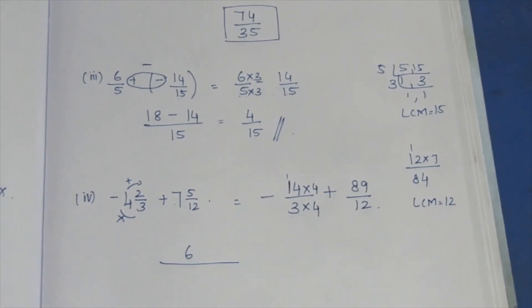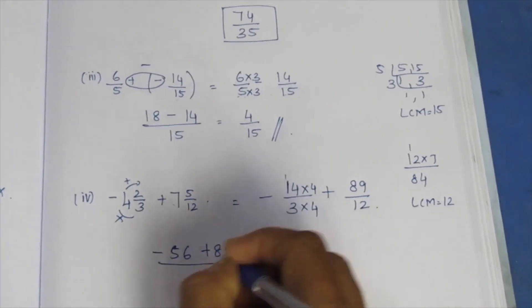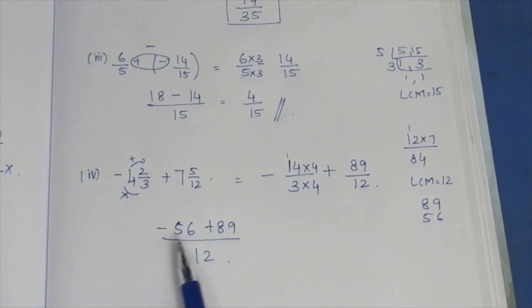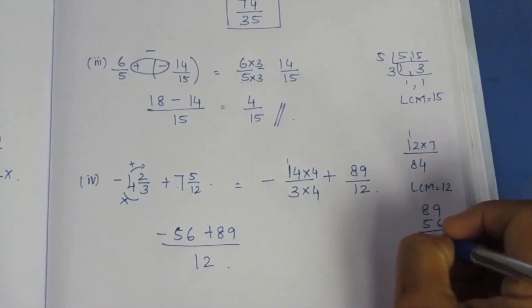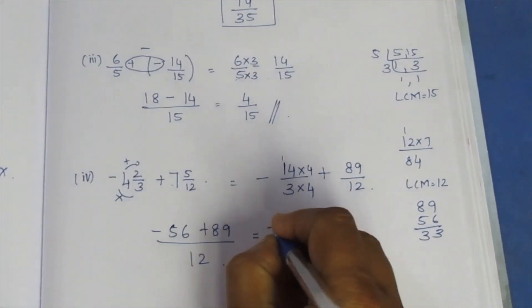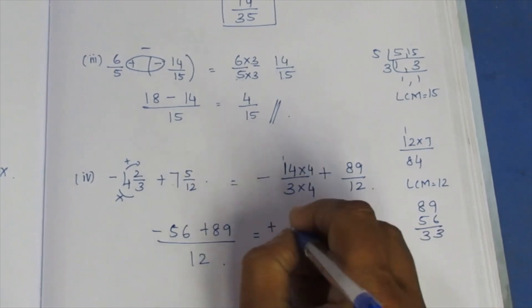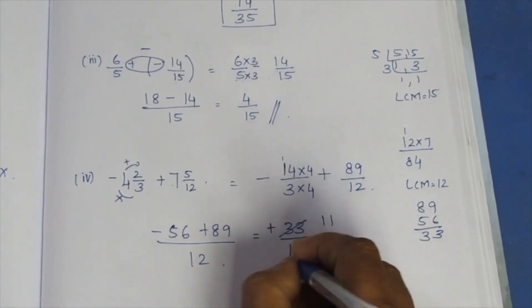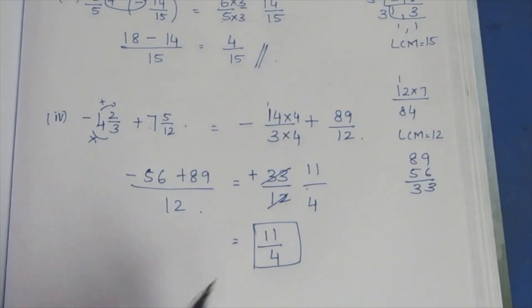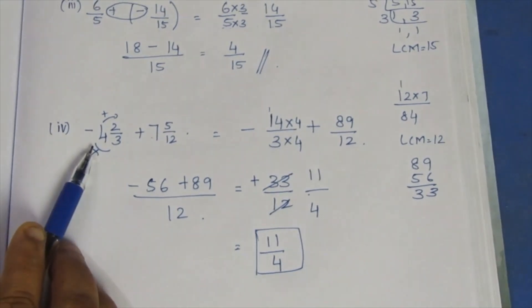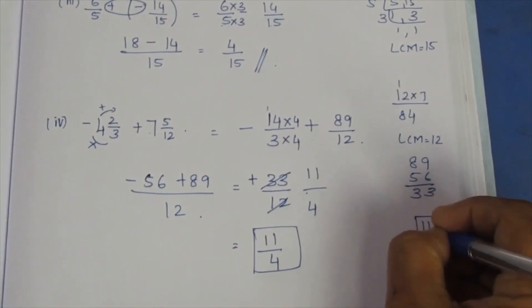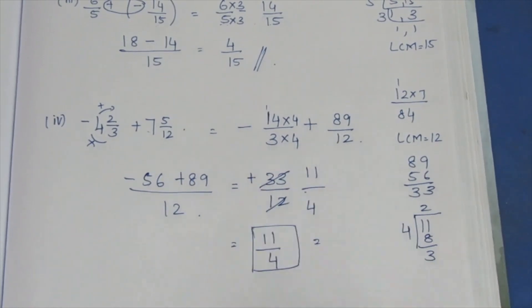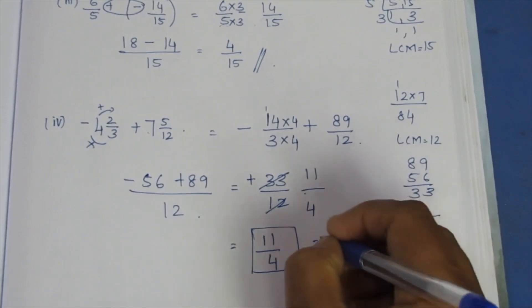Minus 56 plus 89 by 12. 89 minus 56, because if we do a plus minus we do a subtract. Greater number sign, so plus 33 by 12. Now we cancel by 3 tables. 11 by 4. Improper fraction, if we do a mixture fraction, 11 by 4. 4 twos are 8, reminder 3. Quotient is 2 and 3 by 4.